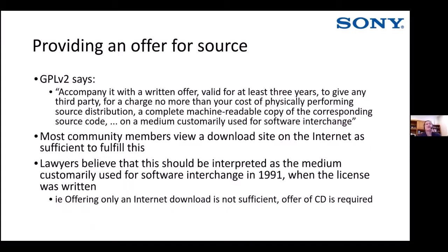The other solution is to provide an offer for source instead of the source itself. The wording of the GPL is: 'accompany it with a written offer, valid for at least three years, to give any third party, for a charge no more than your cost of physically performing source distribution, a complete machine-readable copy of the corresponding source code on a medium customarily used for software interchange.' Most community members feel an internet download site is sufficient, but most lawyers believe that language should be interpreted as the medium used for software interchange in 1999 when the license was written — so offering only on the internet is not sufficient. An offer of a CD or similar physical medium is required.